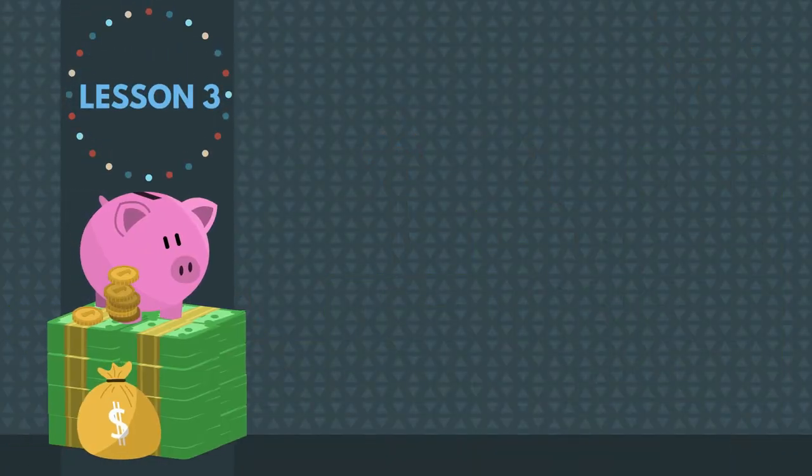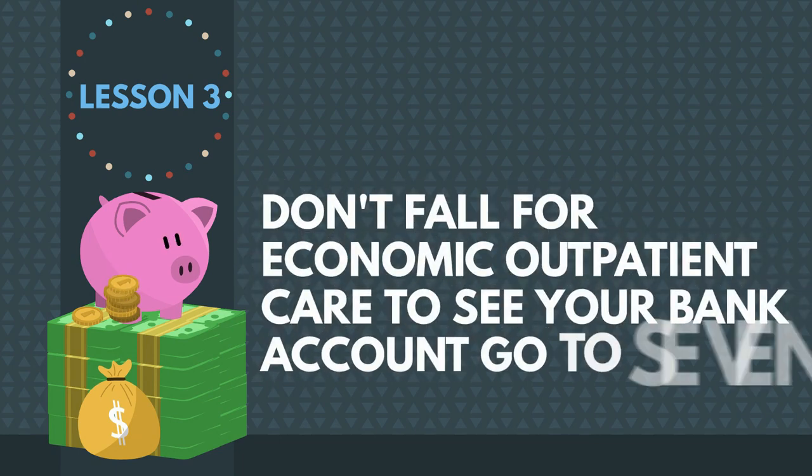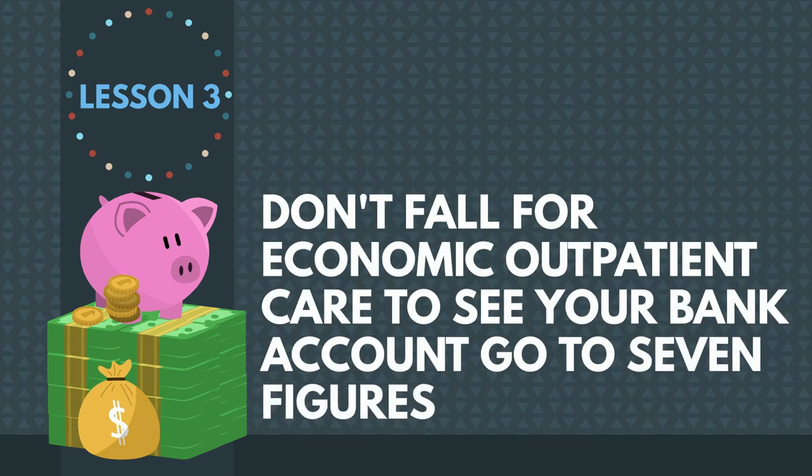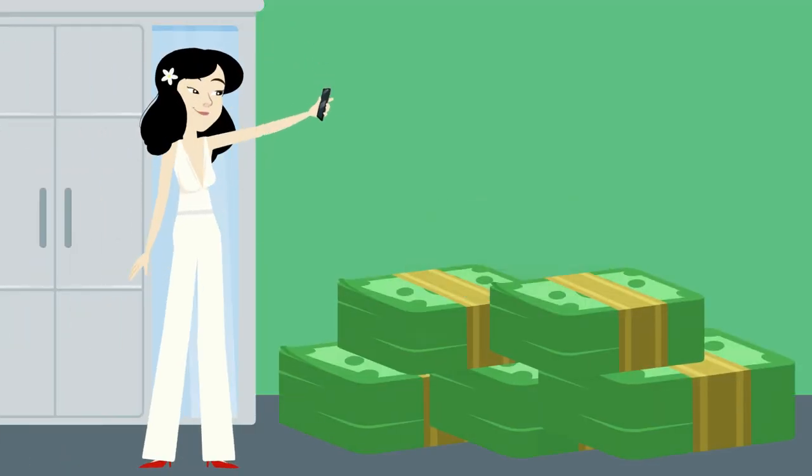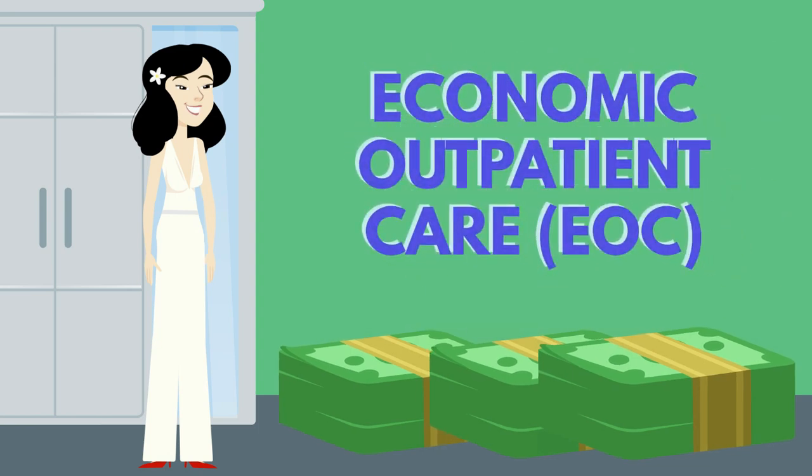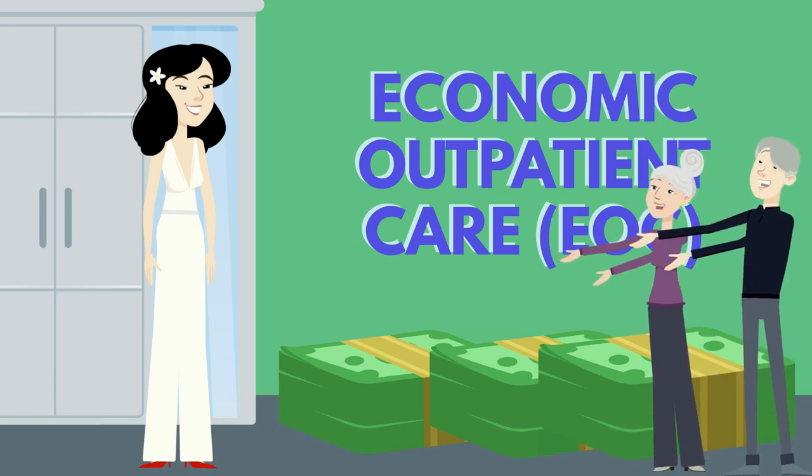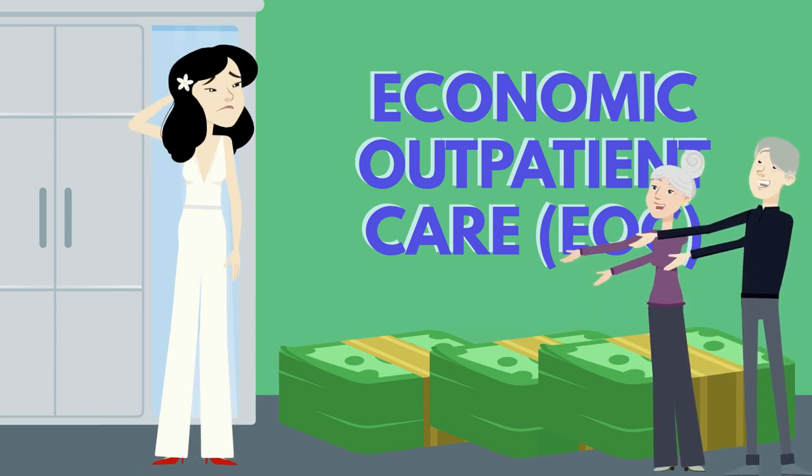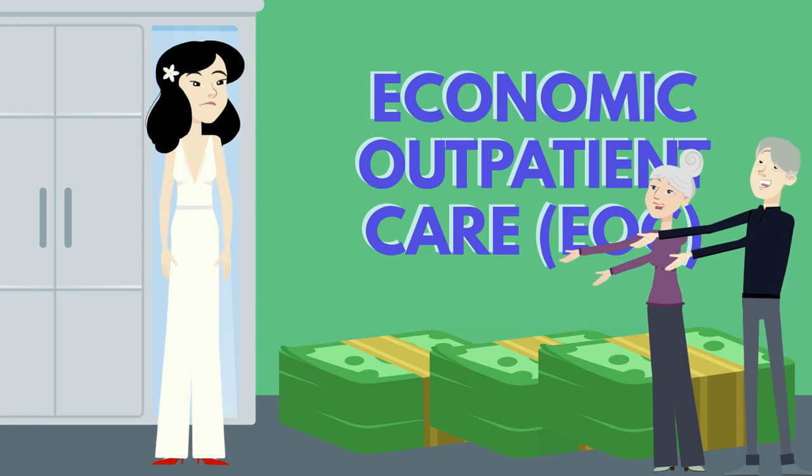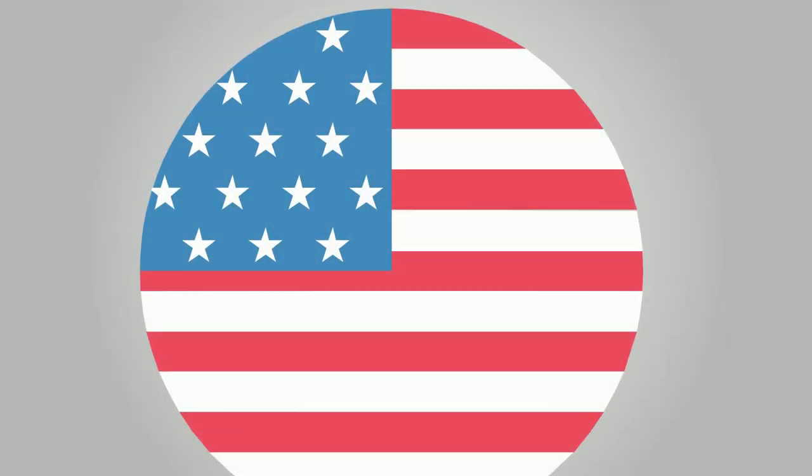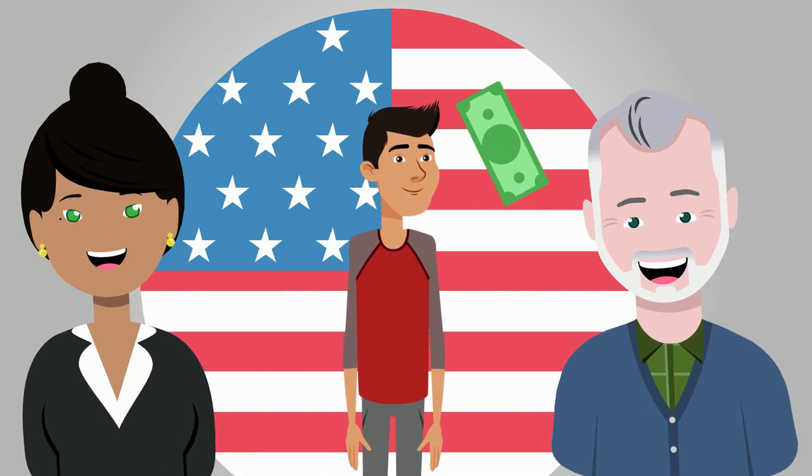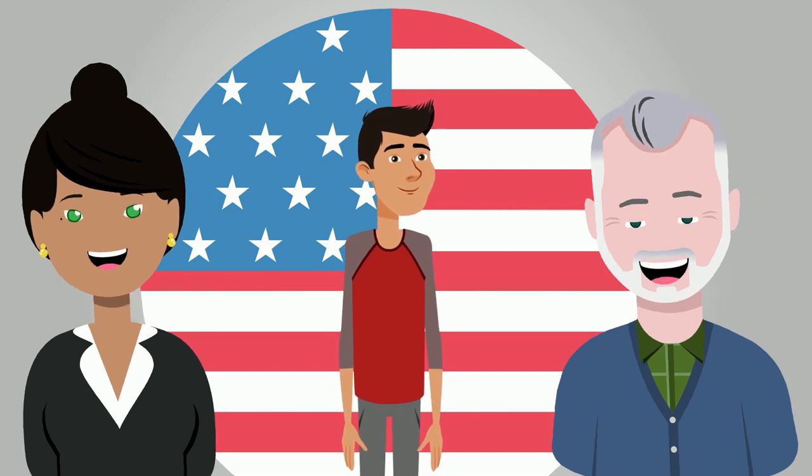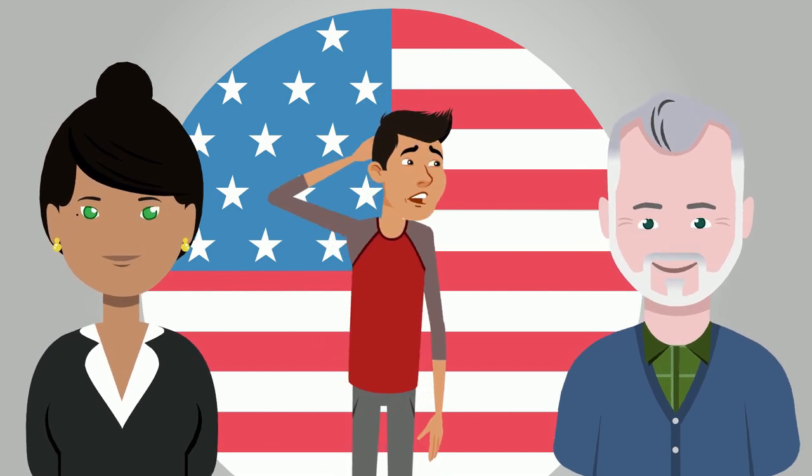Lesson 3: Don't fall for economic outpatient care to see your bank account go to seven figures. Do you know how kids with rich parents often can't handle their finances and never worry about spending? That's what economic outpatient care, EOC, is all about. Most affluent parents mean well when they support their children with their hard-saved money, but in reality, it hurts their ability to handle money. Almost half of all wealthy Americans sponsor their children and grandchildren with over $15,000 per year, which leads them to acquire the according lifestyles, even though they technically can't afford them.